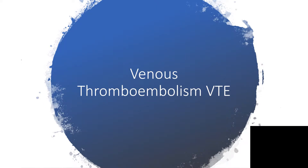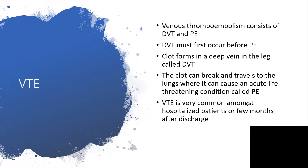Hi everyone, I want to talk about venous thromboembolism — a very familiar topic, but let's go into the details together. Venous thromboembolism consists of two entities: deep vein thrombosis and pulmonary embolism. Deep vein thrombosis must first occur before an individual develops pulmonary embolism. The clot forms in the deep vein, but the clot can break off and portions of it will travel to the lungs, causing an acute life-threatening condition called pulmonary embolism.